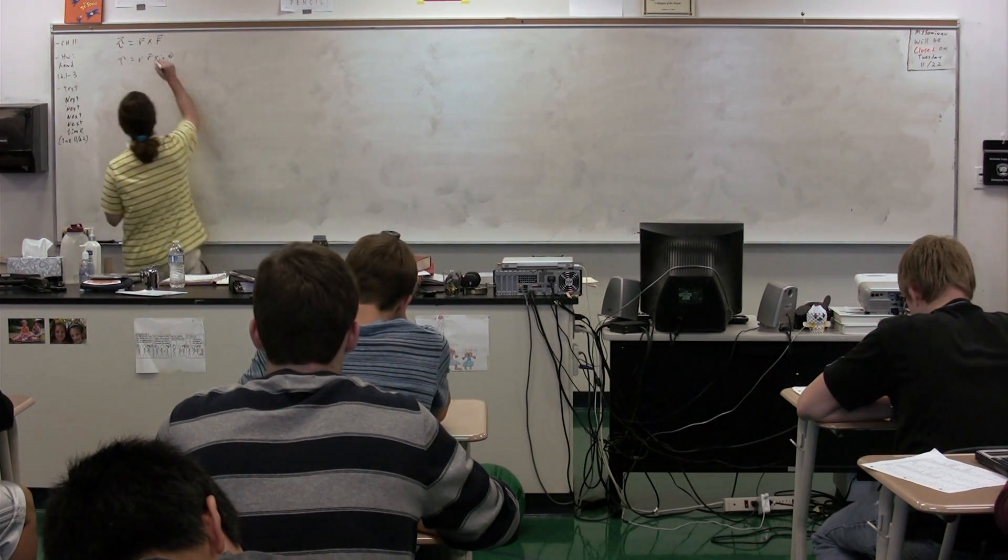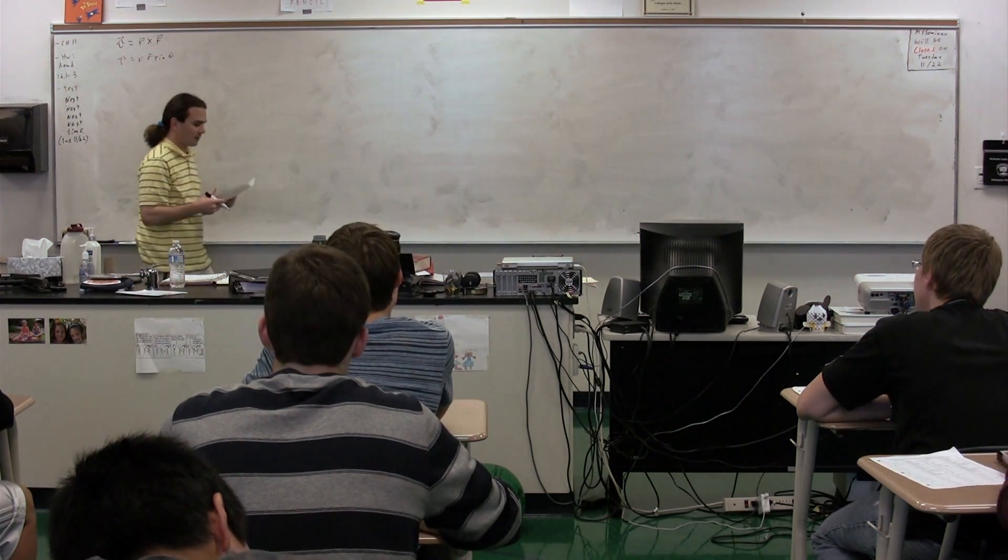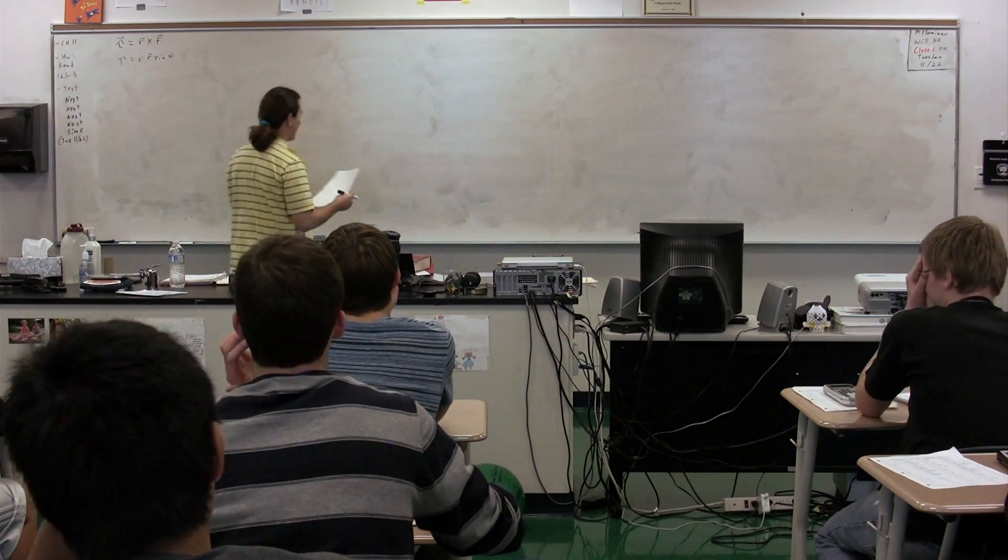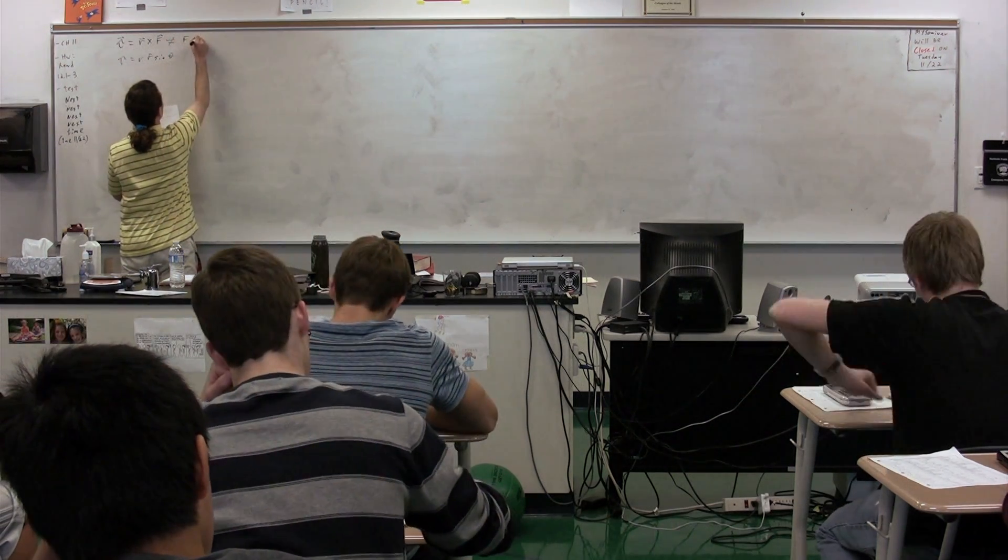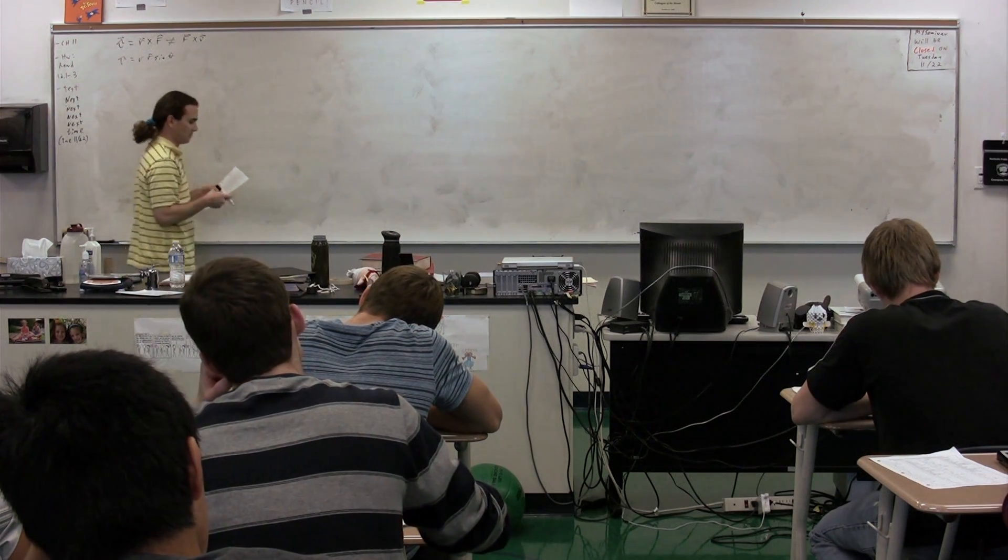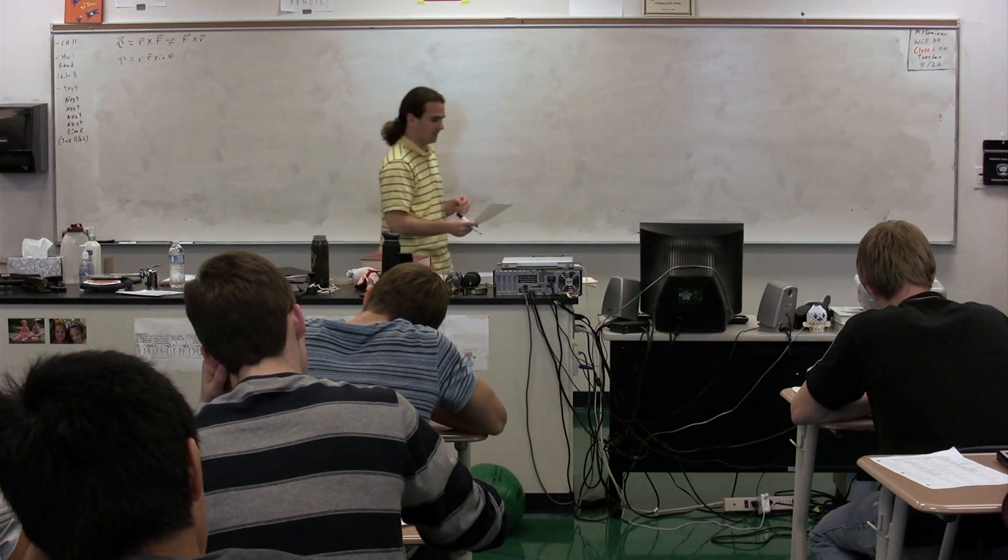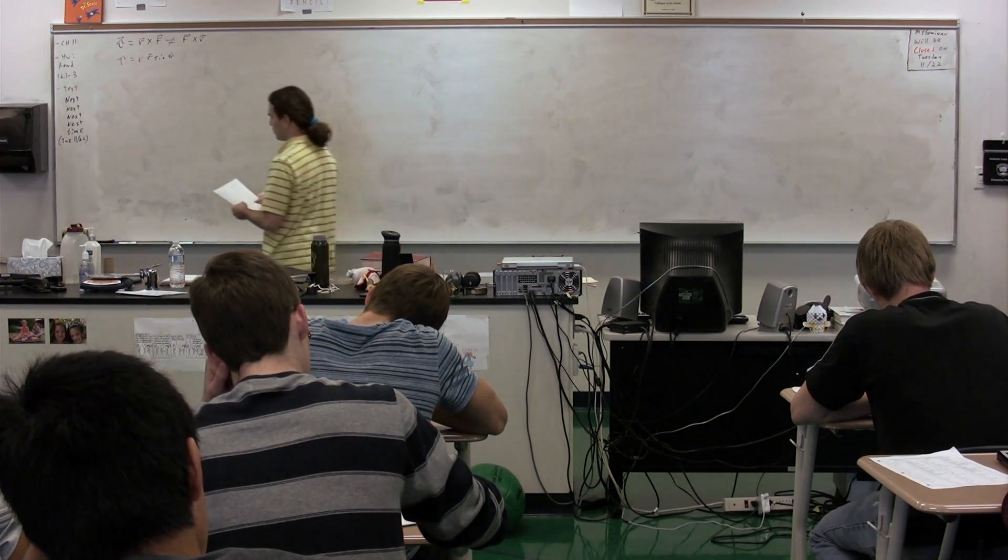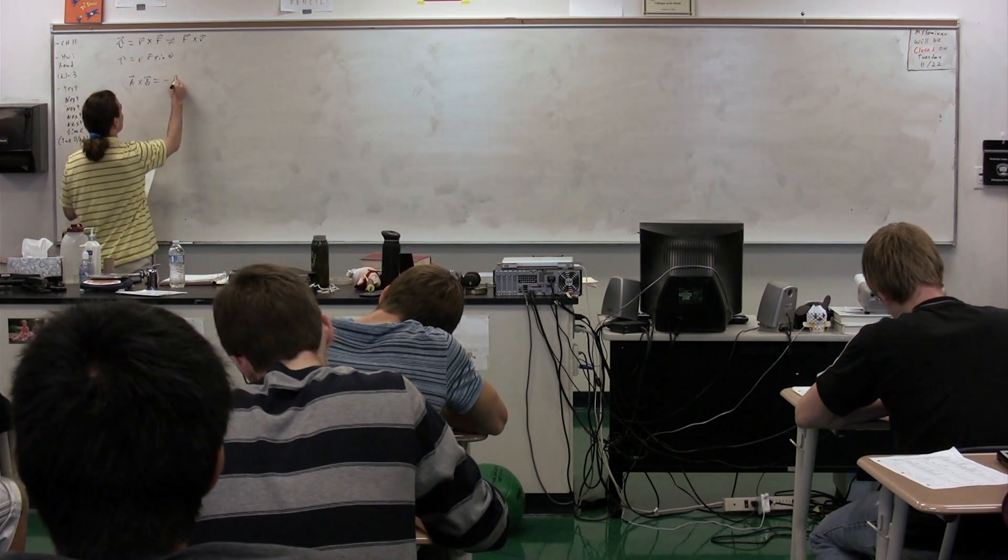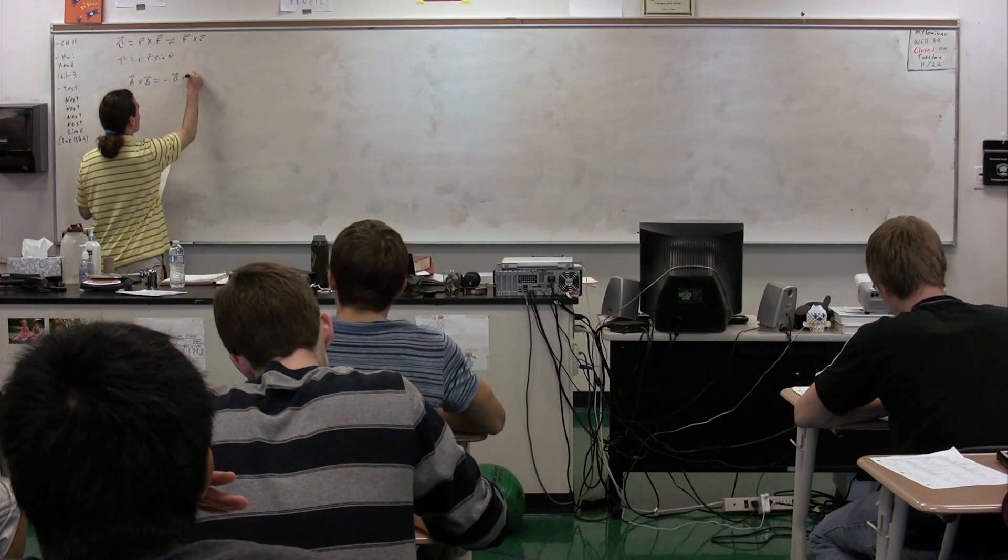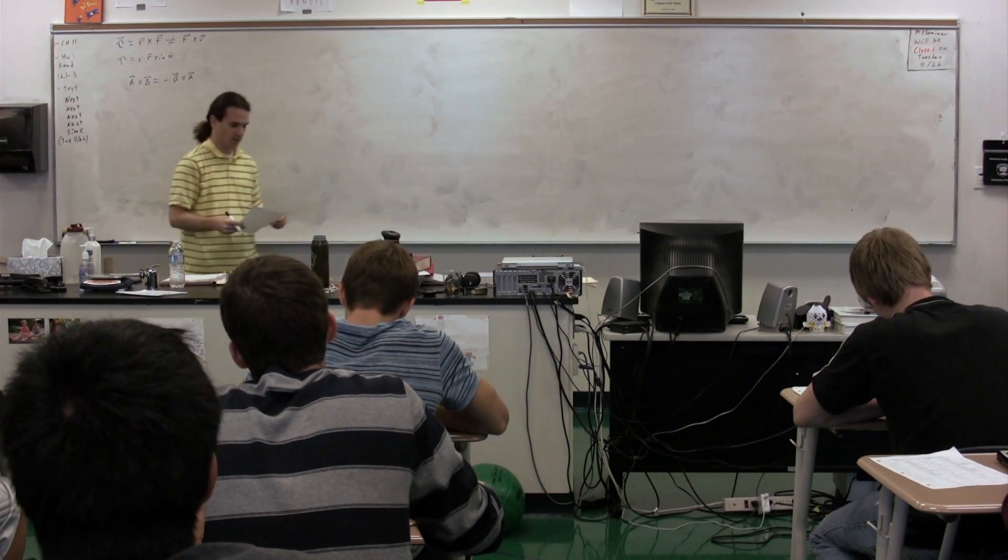Please remember for the vector product, the cross product, that the order does matter. So this is not the same as F cross R. Please be aware of that. The order matters. So if you were curious, the way it works is A cross B is actually equal to the negative of B cross A. That's how it ends up working.